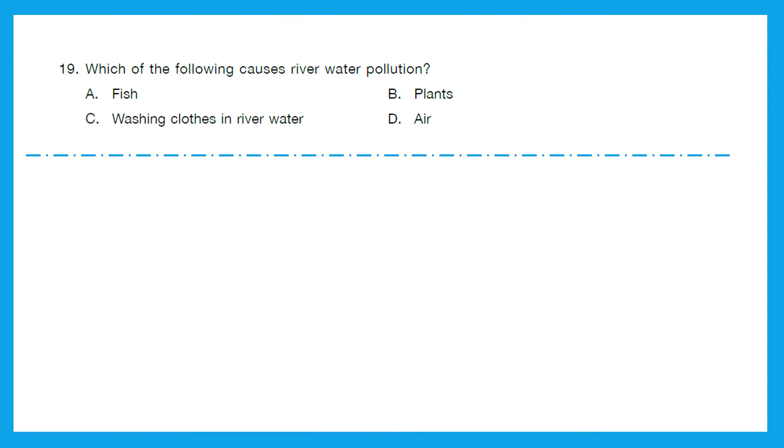Question 19: Which of the following causes river water pollution? Is it fish? No. Plants? No. Washing clothes in river water? Yeah. Rainwater? I haven't heard of it. Air? So, the right answer over here is washing clothes in river water definitely causes river water pollution. Option C is the right answer.